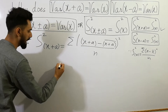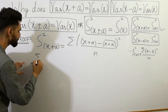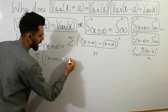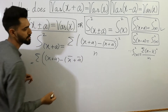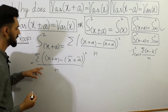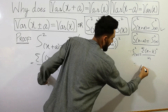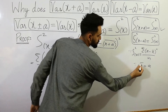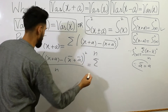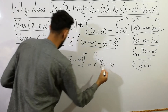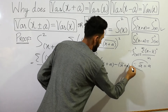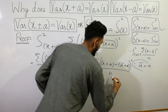Now let's continue the proof. Here you can write: summation of (X plus a) as it is, minus (X bar plus a bar), completing the square, divided by n. Since the mean of a constant is the constant itself, a bar equals a. So you can write: summation of (X plus a minus X bar minus a bar), completing the square, divided by n.